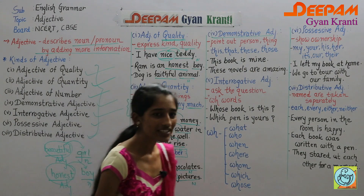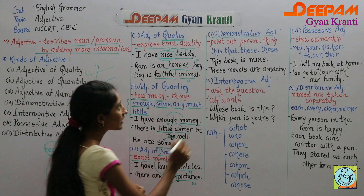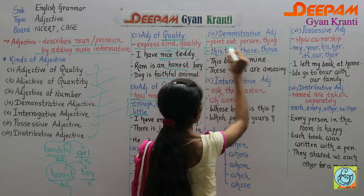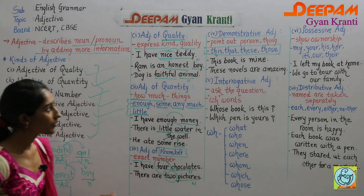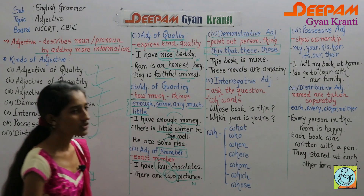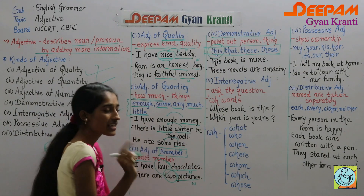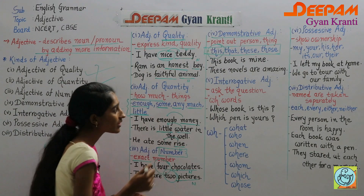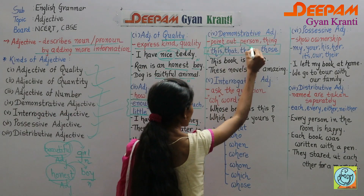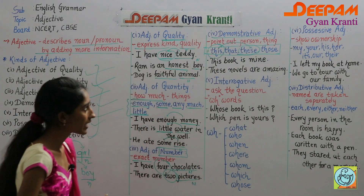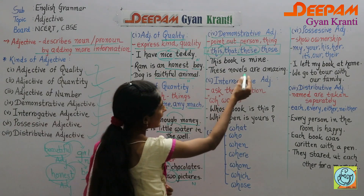Next is demonstrative adjective. This type of adjective points out a person or thing and shows exactly where it is. The keywords are: this, that, these, and those. Be careful — 'this' (T-H-I-S) is singular, used to indicate a singular thing. 'These' (T-H-E-S-E) is the plural form. The same applies to 'that' and 'those.'